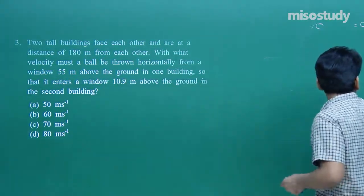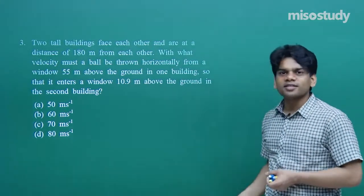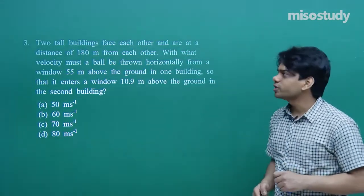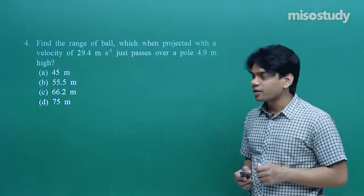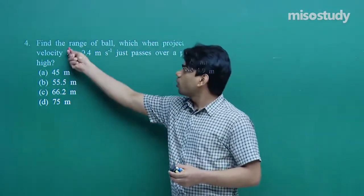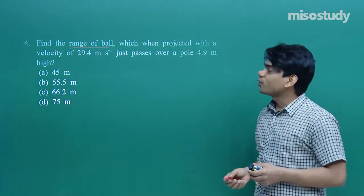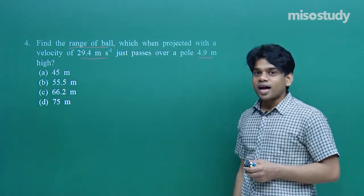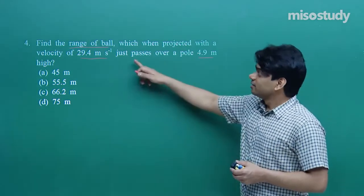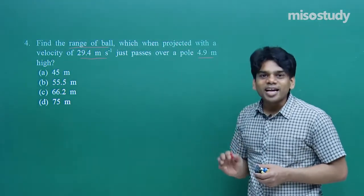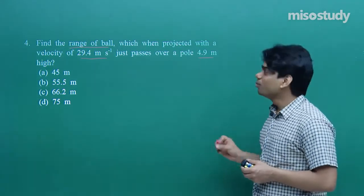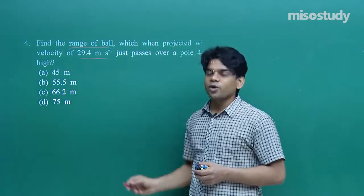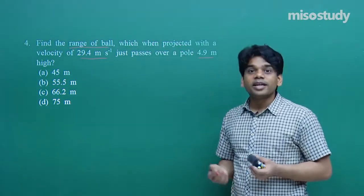I hope you are learning and noting all these things. Let's go with the fourth question. Find the range of a ball projected with a velocity of 29.4 m/s that just passes over a pole 4.9 m high. The maximum height is 4.9 m. Options: (a) 45 m, (b) 55.5 m, (c) 66.2 m, (d) 75 m.